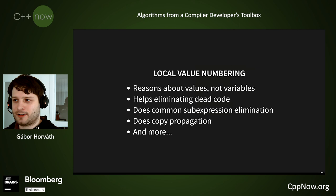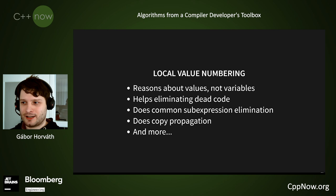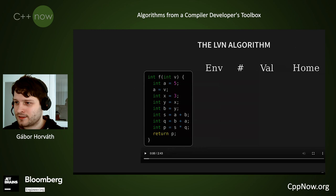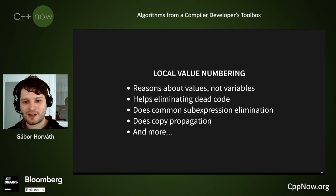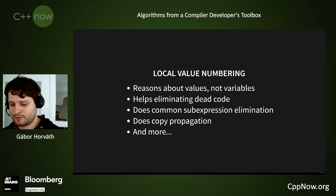The value numbering algorithm has many variants. Today I'll talk about the simplest: local value numbering. A key point is that it reasons about values, not variables. A variable might have multiple values over time, and we try to number these values in a smart way. This helps us uncover dead code, eliminate common sub-expressions, do copy propagation, and much more — another optimization where implementing one thing gives many good results.